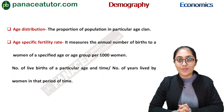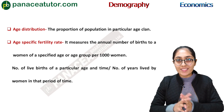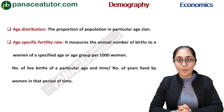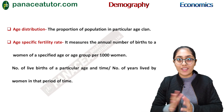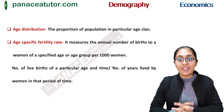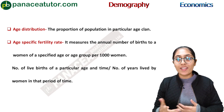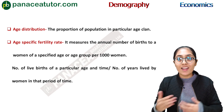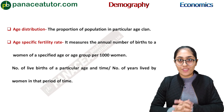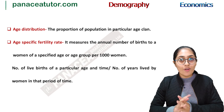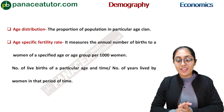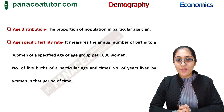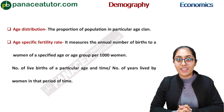The next term is age distribution, which means the proportion or percentage of population in a particular age clan or a particular age group. Now we will study age specific fertility rate. It means the annual number of births occurring to a woman of a specific age. Its formula is: number of live births of a particular age and time divided by number of years lived by a woman in that particular age.